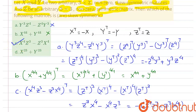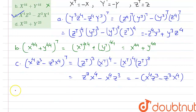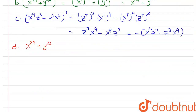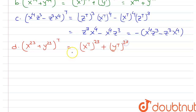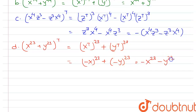Let us finally evaluate option D: X²³ + Y²³. We find the transpose, which equals (Xᵀ)²³ + (Yᵀ)²³. Since X transpose = −X, this gives (−X)²³ = −X²³, and since Y transpose = −Y, we get −Y²³. So the transpose equals −X²³ − Y²³ = −(X²³ + Y²³). Therefore the matrix X²³ + Y²³ is a skew symmetric matrix, and option D is also correct.